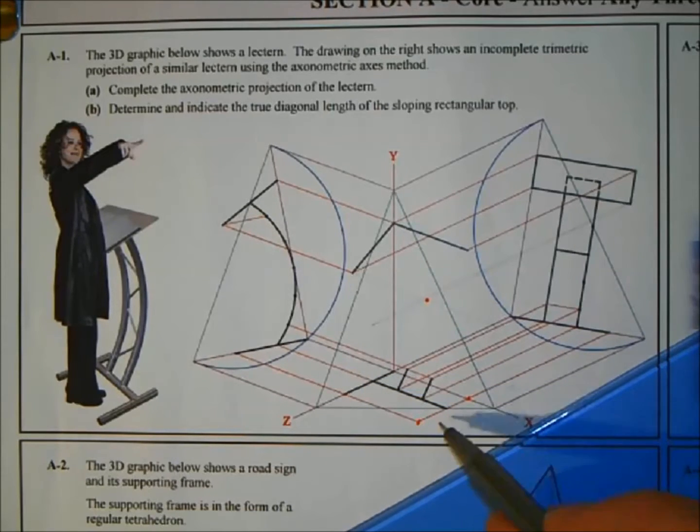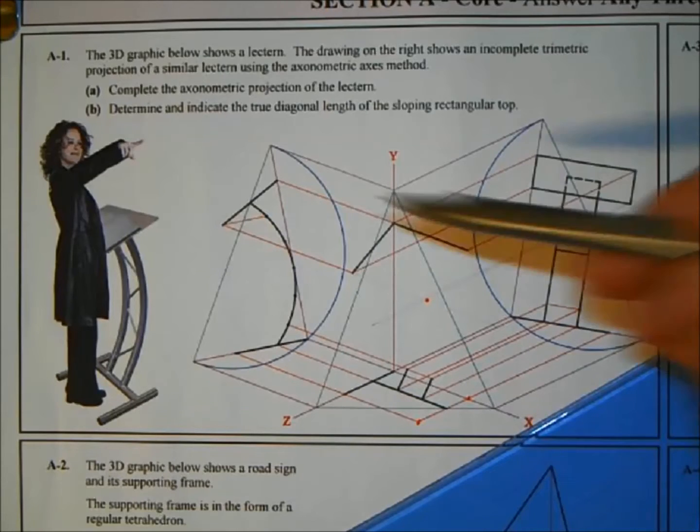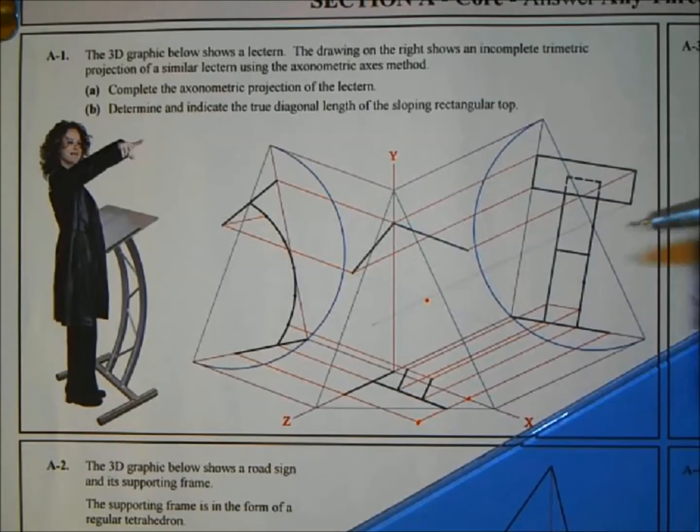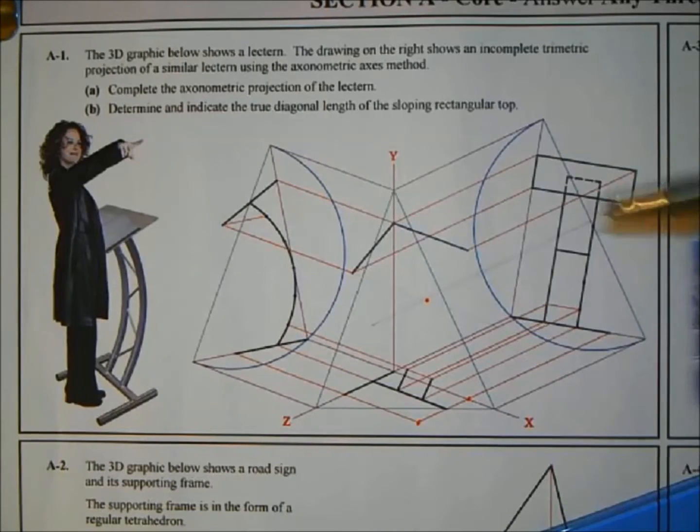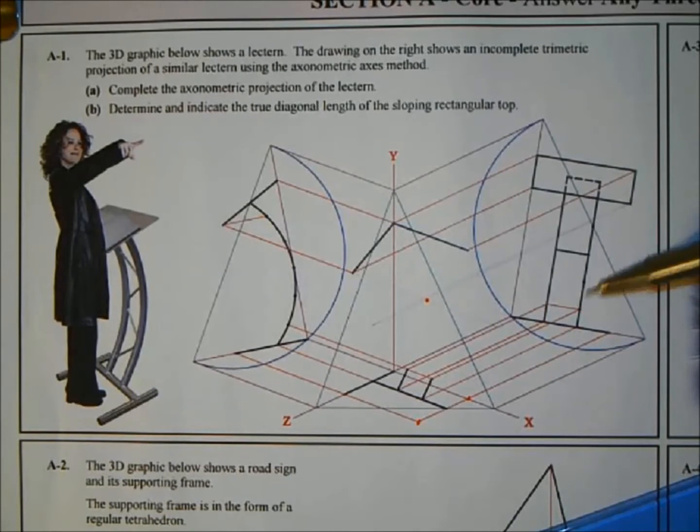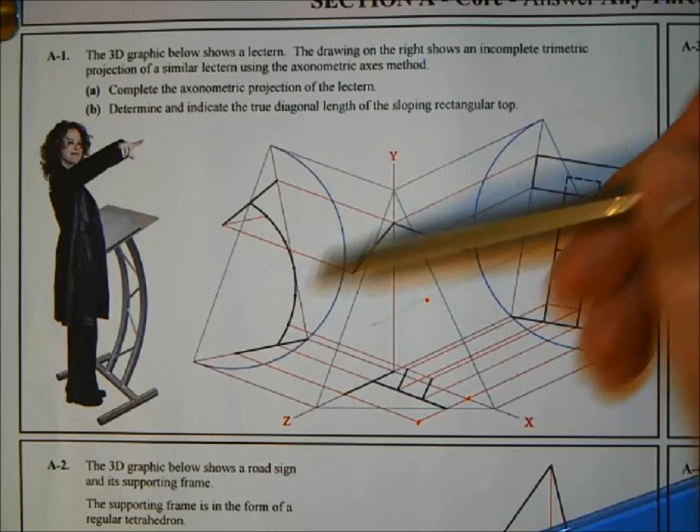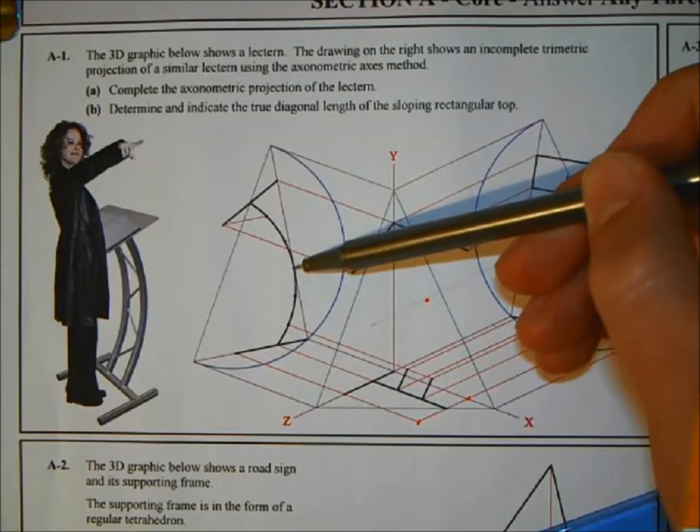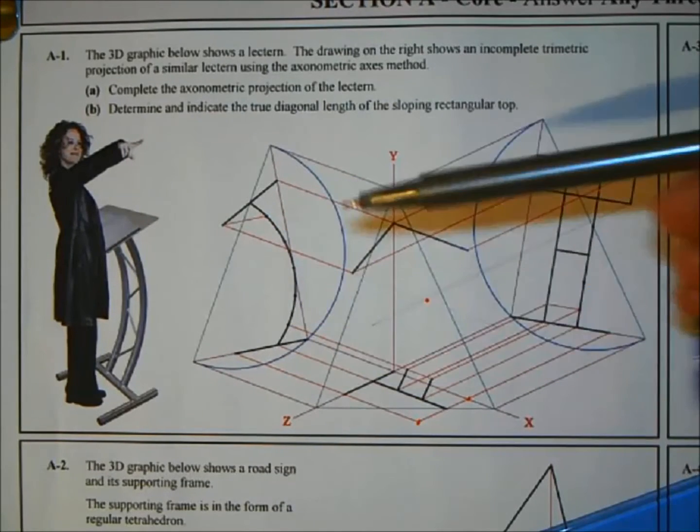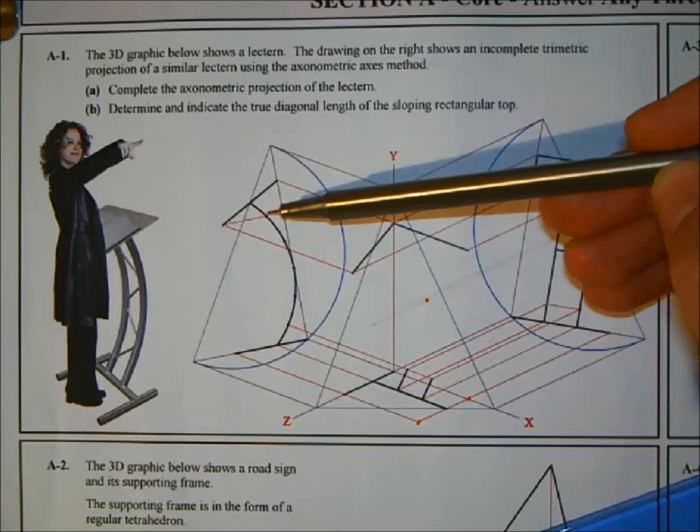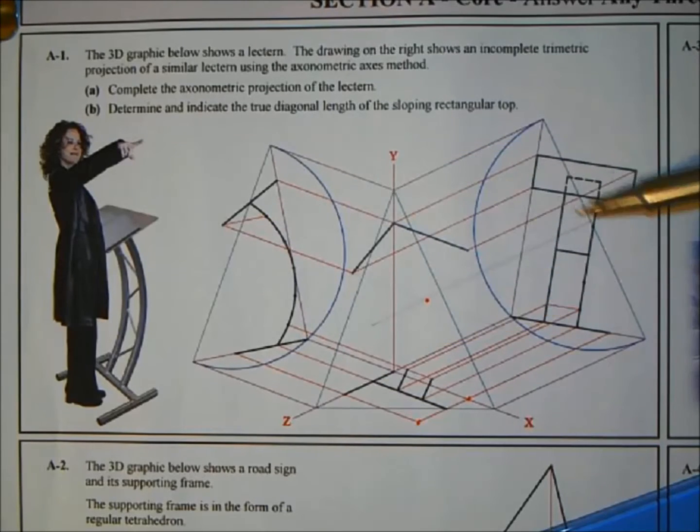Now the hard part is the curve. Look at the drawing, they give you a lot of information. If you see here, see these little black dots? They correspond to the black dots here on the curve. They're giving you heights.